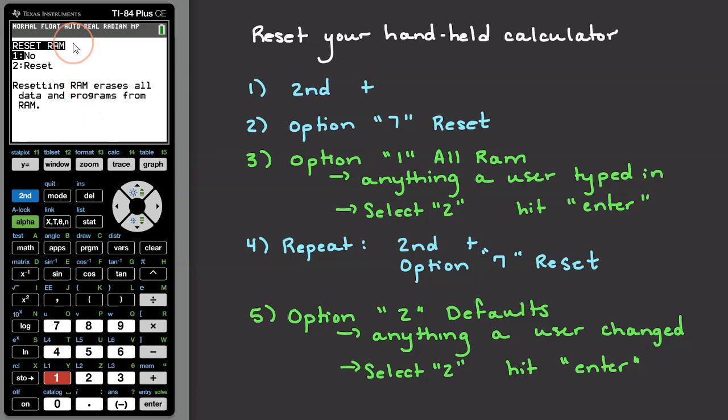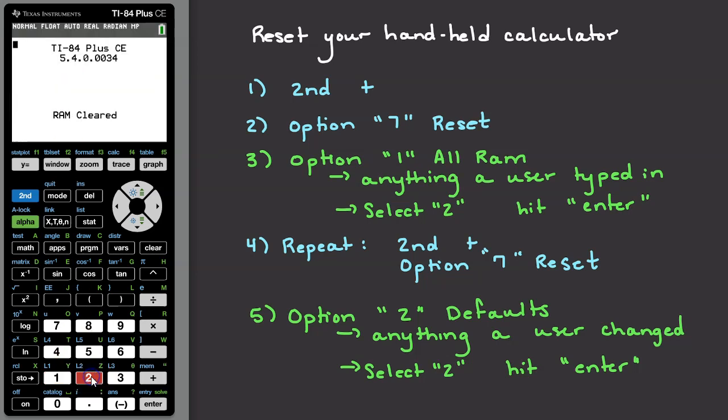Next, this menu asks whether you would like to reset the RAM or not. Select option 2 to reset. You may need to hit enter depending on the model of calculator that you're using. In either case, you should see a screen that says RAM cleared.